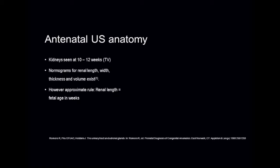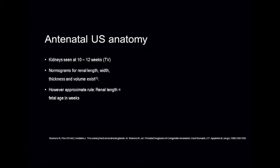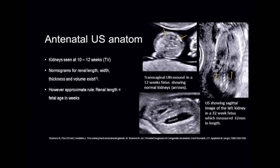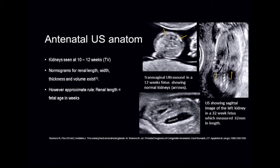In terms of antenatal ultrasound anatomy, the kidneys are seen at about 10 to 12 weeks but by transvaginal ultrasound only. This picture shows the kidneys in the fetus bilaterally on a coronal reformatted image from a 3D image, and again you can see the kidneys on both sides. Normograms for renal length, width, thickness, and volume exist, but in clinical practice we use an approximate rule: renal length equals fetal age in weeks. This ultrasound image in a sagittal orientation shows the left kidney measuring 32 mm in a fetus of 32 weeks gestational age.